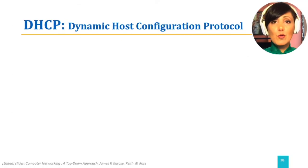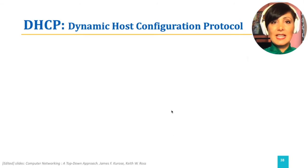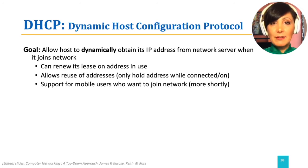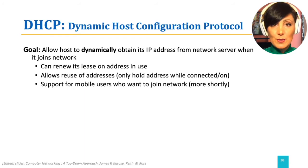DHCP is useful when you are within a subnet and need an automatic assignment of a host address. It assigns IP addresses from the available pool when endpoints join the network and releases them when endpoints leave. An endpoint can also renew its IP address lease while it is still in use.